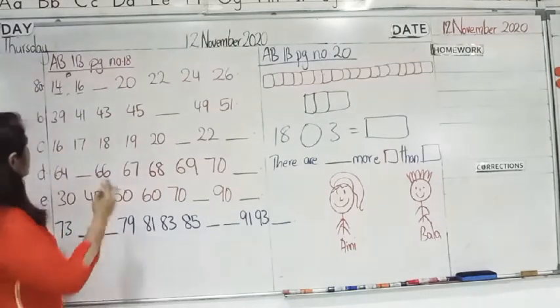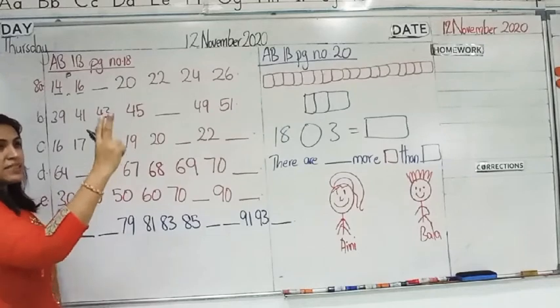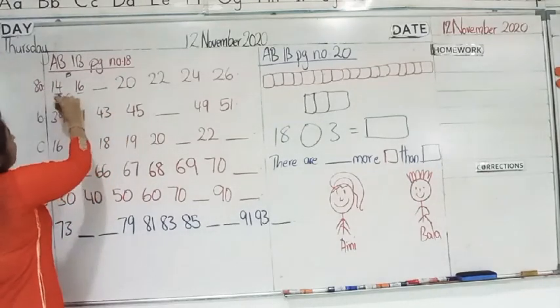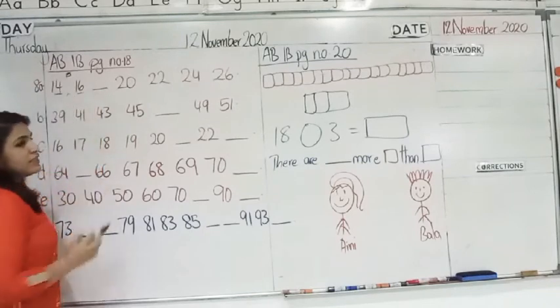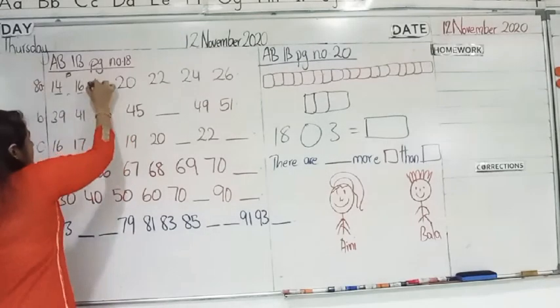For example, you are standing at 14. Next number is 16. So, 14, 15, 16. To reach 16, you have to do two steps. Correct? So, now, 14, 16. If you are at 16, count by twos. 17, 18. Correct?